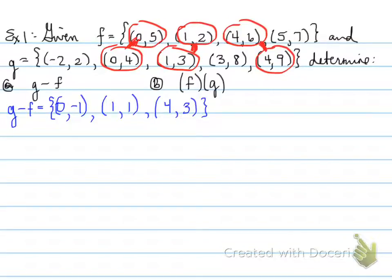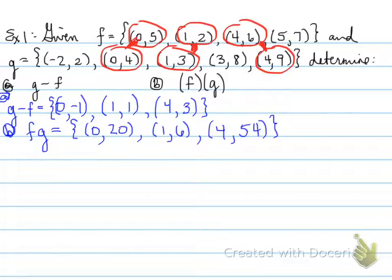And those are the coordinates for g minus f. Now, we want to determine f times g. So f times g means that we're going to take the same x, and then multiply the y's, to get (0,20), (1,6), and (4,54). So we did that by multiplying the y-coordinates, and we keep the same x to get all of these values.